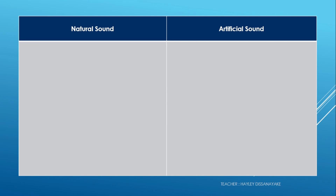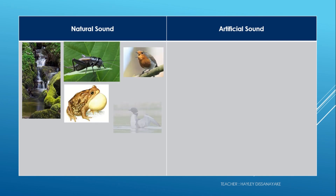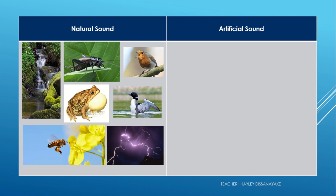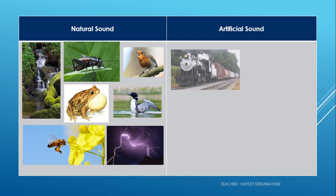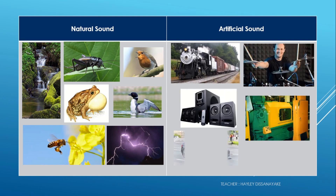Sound can be classified as natural sounds and artificial sounds. Examples of natural sounds are a bird's call, cat's meow, dog bark, humming of bees, sound of flowing water, sound of wind blowing, and thundering. Some examples of artificial sounds are the sounds of machines in factories, the sound of vehicles, sound of musical instruments, and sound of electrical instruments.